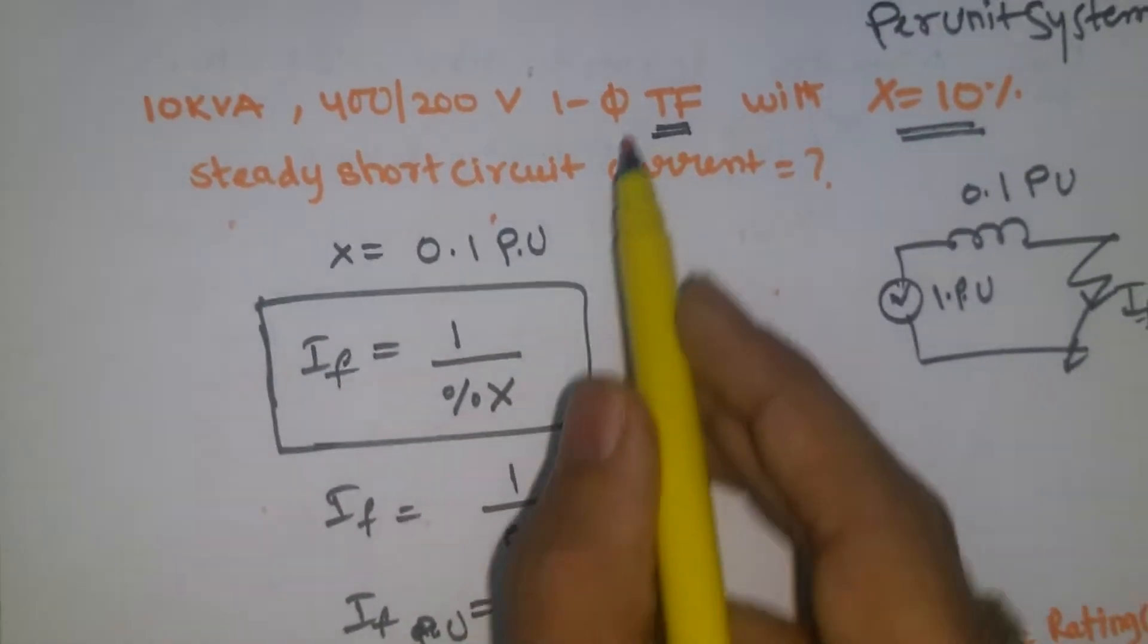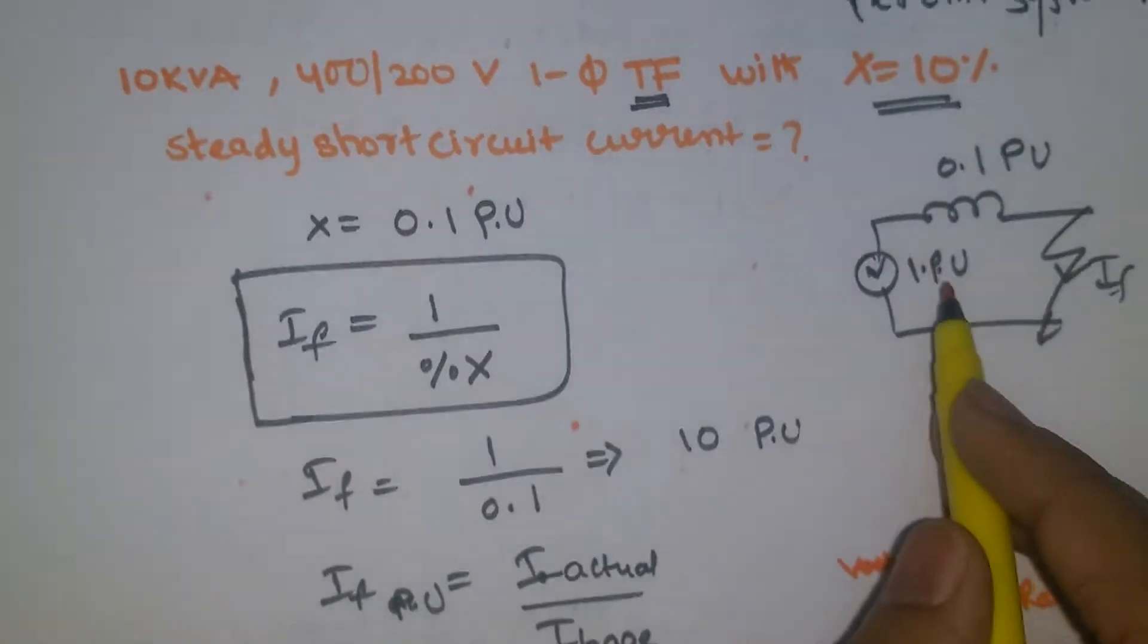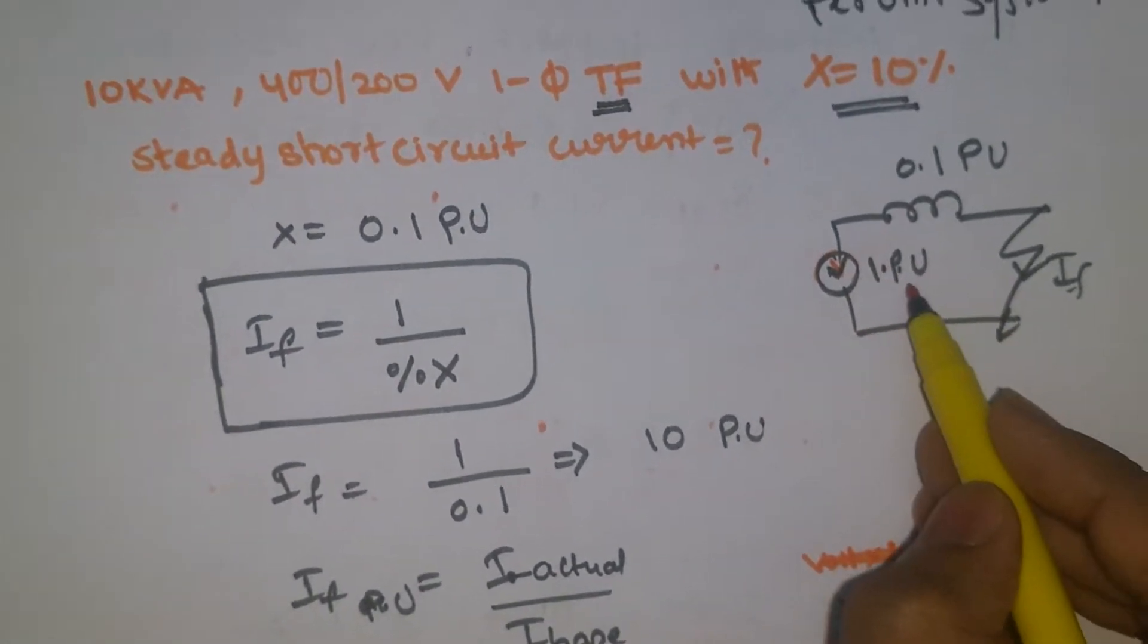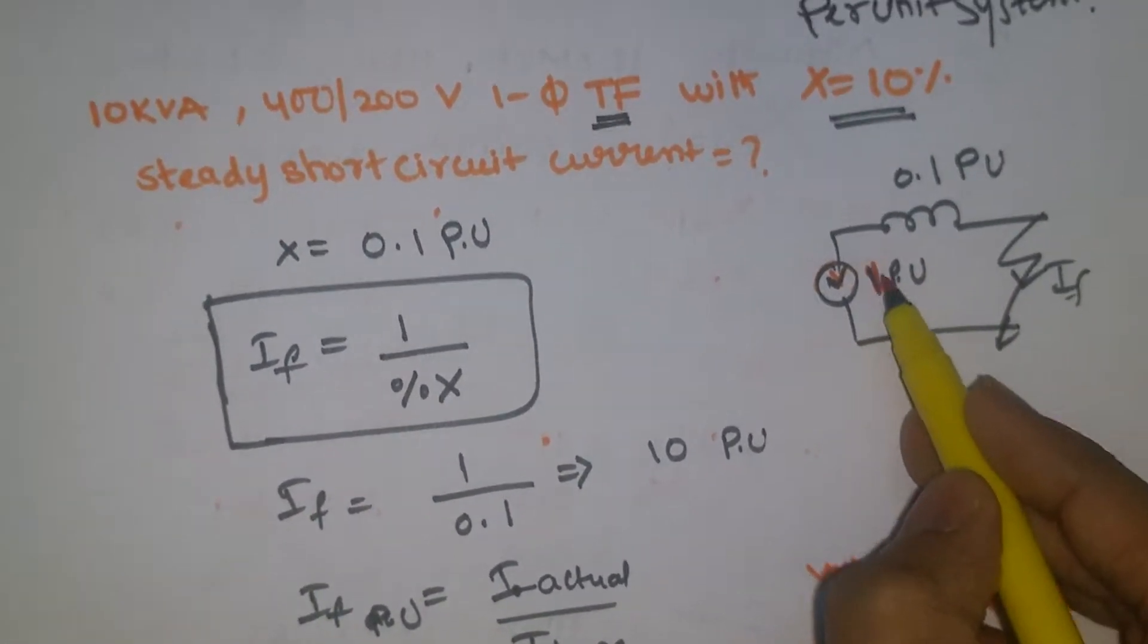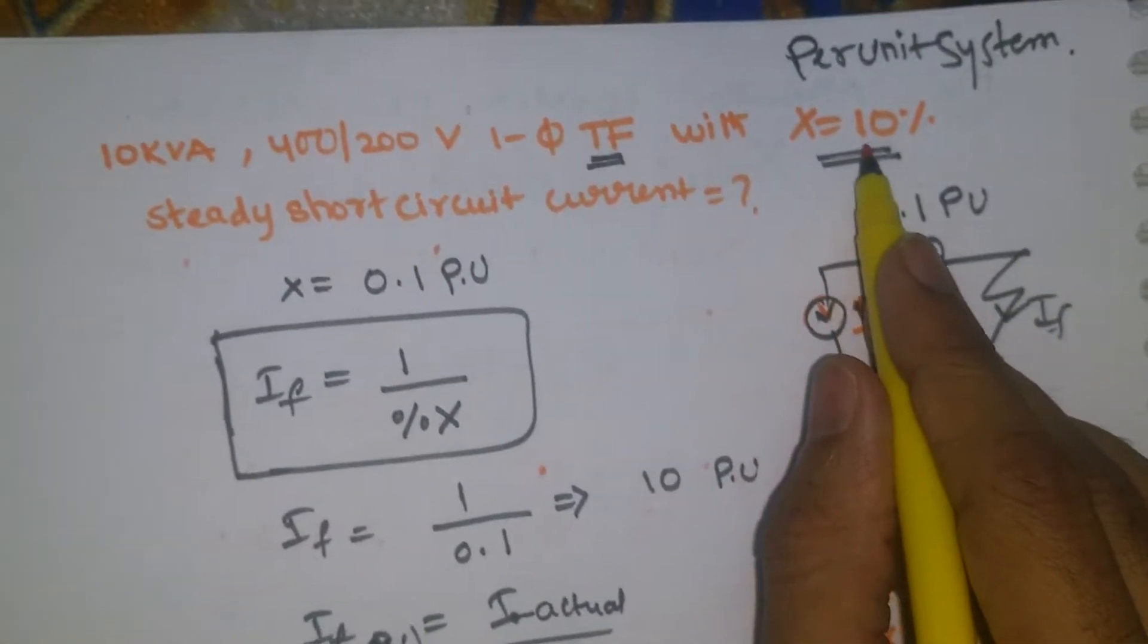We have single phase transformer, so short circuit means like LG fault. Consider one voltage source with the per unit system, one per unit, and reactance, that is the per unit value 10%, 0.1 per unit.